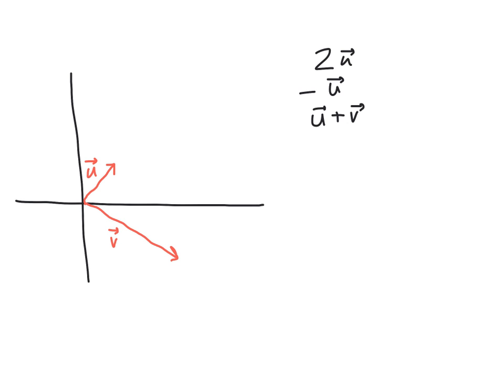2 times u, since 2 is positive, is in the same direction as u but with magnitude multiplied by 2. Drawn in blue, it goes through u and is approximately twice the length. If it were 3u we'd go out three times as far; 4u, four times as far; one-half u, half as far. Scalar multiplication by a positive number stretches or shrinks vector u based on the scale factor.